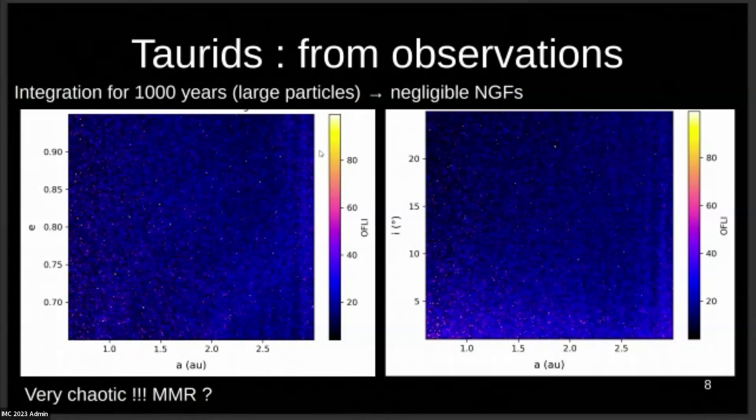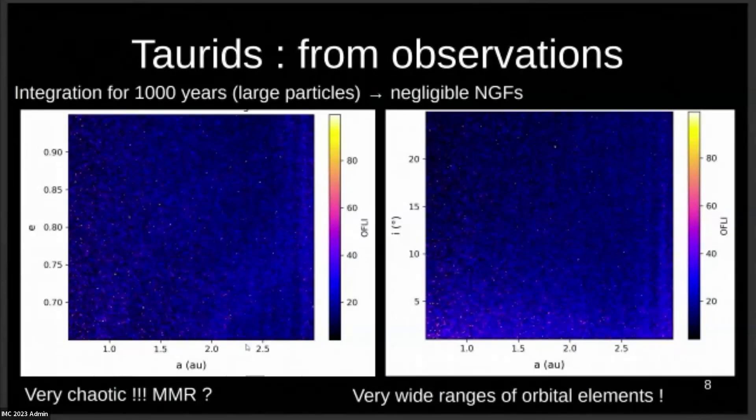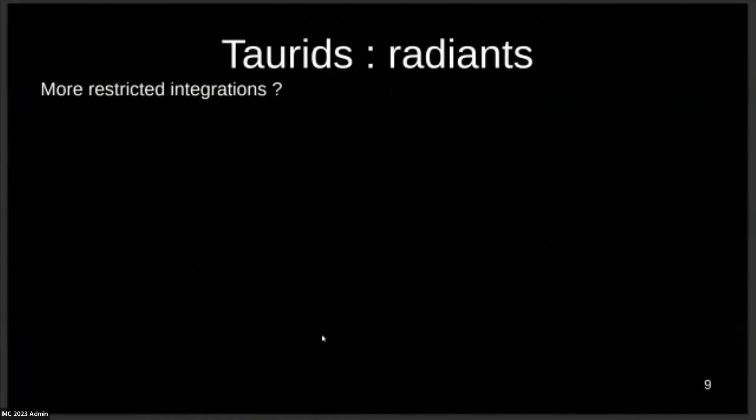We can see that it's very chaotic. We have an OFLI here that goes very high, much higher than we've seen for the Draconids and Leonids. Maybe you can see here some kind of dark line which kind of looks like an MMR, but I don't want to be too assertive on this. There is the main problem. The orbital elements are on a very wide interval. Even if I tried to be very hard on the database to really choose initial conditions that would fit with the Taurids, despite all this, I have very wide ranges of orbital elements, which means my maps may not be precise enough to make important characteristics appear.